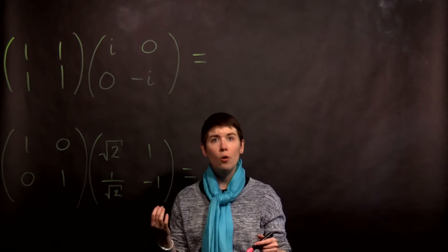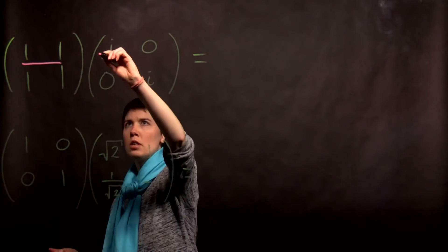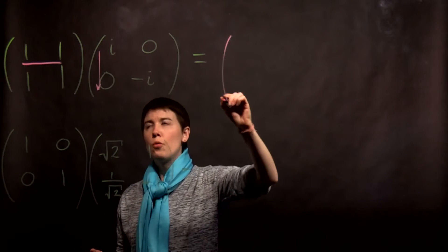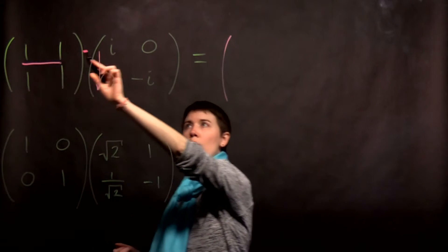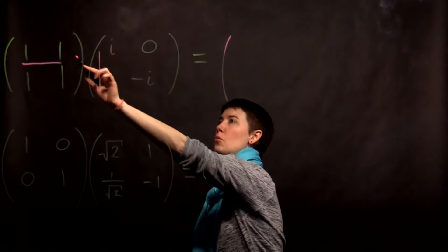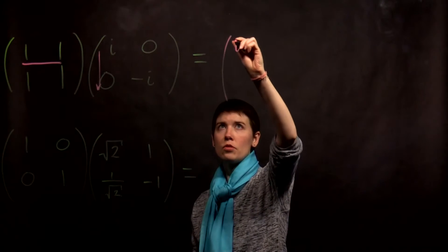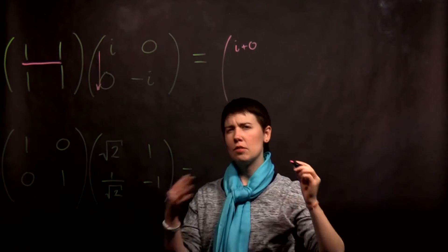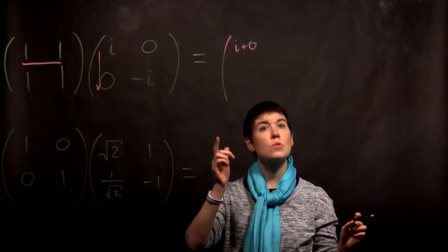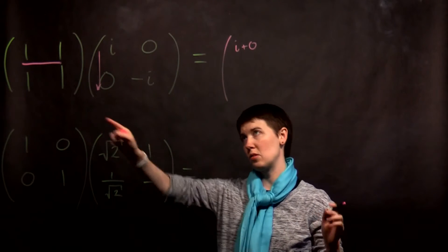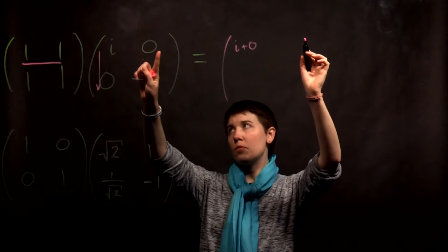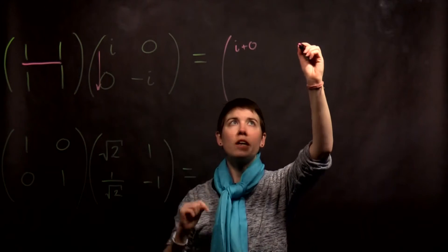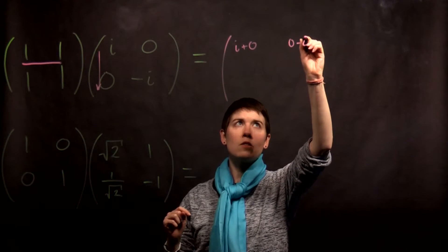So remember we go row by column. So our first entry is going to be 1 times i plus 1 times 0. So it's going to be i plus 0. And I'll simplify at the very end. I'll write it out explicitly the two terms to help you practice this. The second column will be 1 times 0 and then 1 times negative i. So this is 0 minus i.